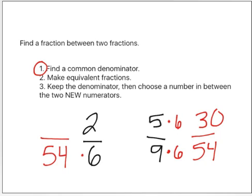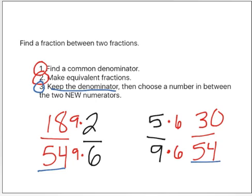On the other side, six times nine is fifty-four, so I'm going to do that again. Nine times two is eighteen. I just made equivalent fractions. Step number three, keep the denominator. I'm going to keep the fifty-four, and I'm going to write that down.